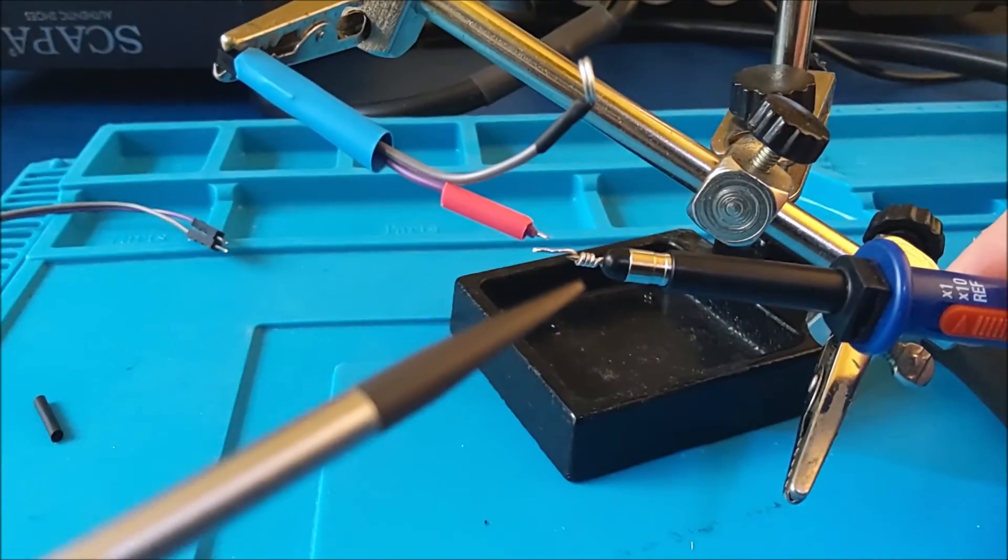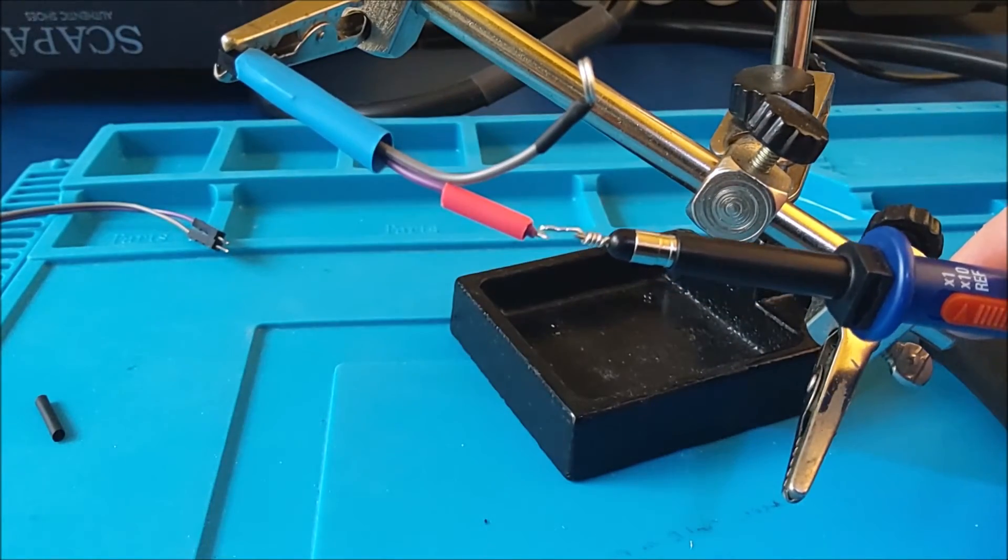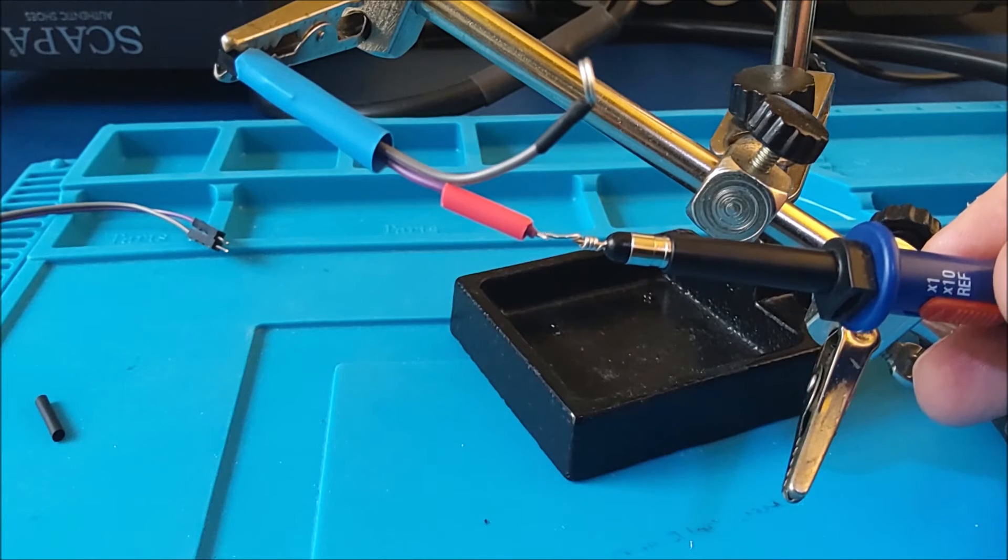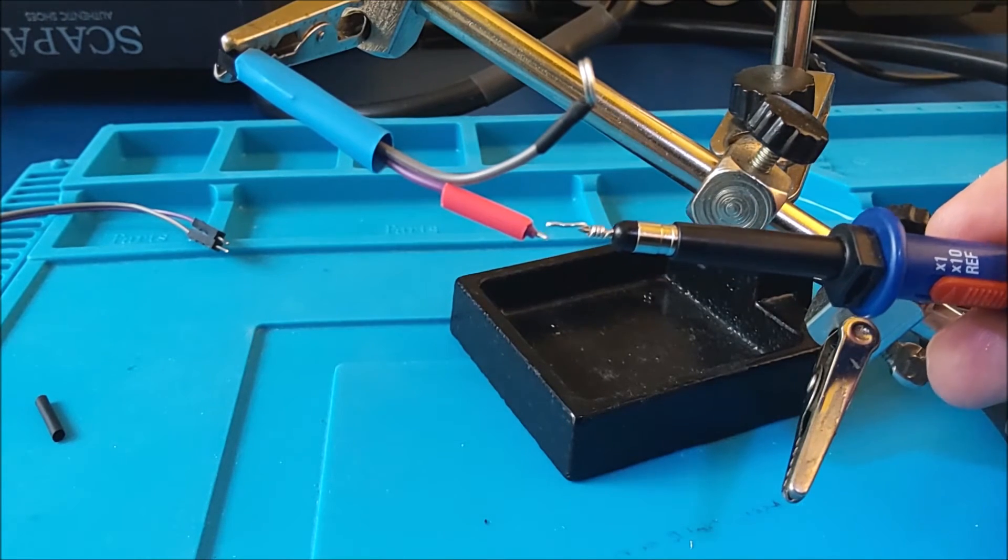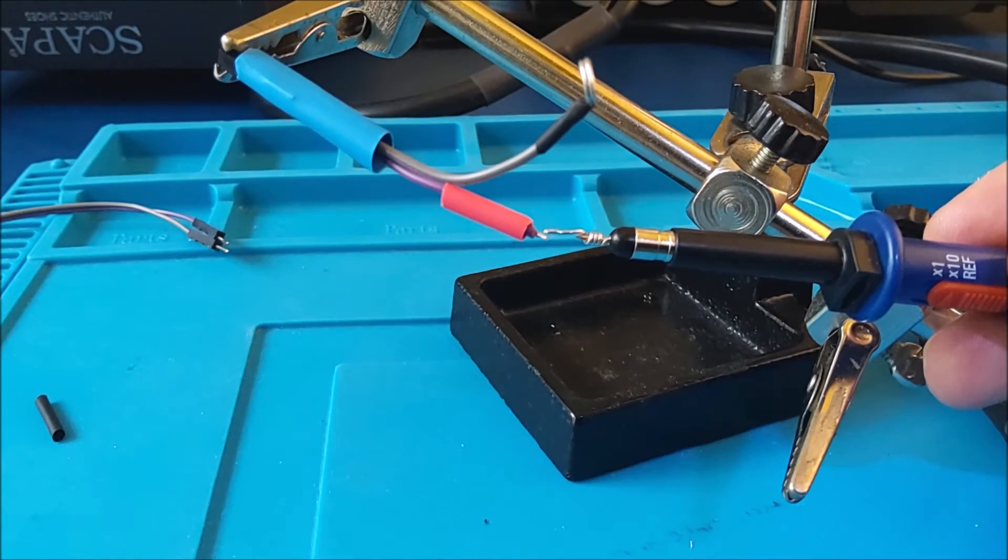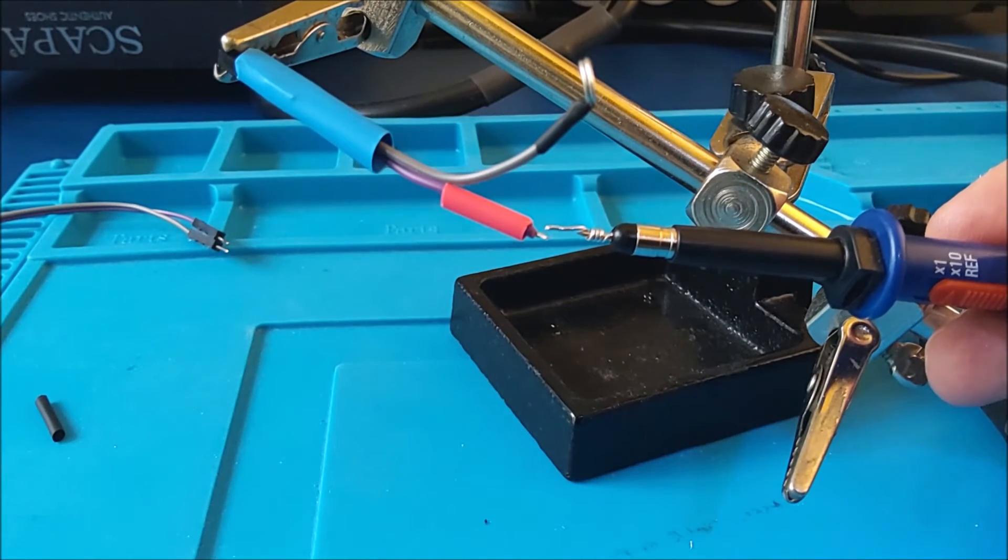I'll now solder these two together after putting the ground around the probe, then move the heat rings over, heat shrink them, and move the big blue heat shrink over. That should be it.